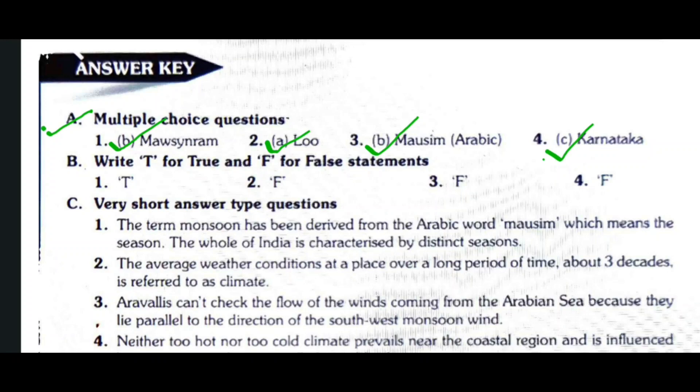Now for True or False statements. India remains almost dry in winter — True. Southwest monsoon winds blow after winter — False. Sun-facing slopes are also windward slopes — False. The season of advancing monsoon is from January to July — False.